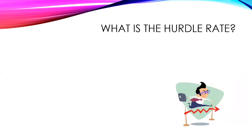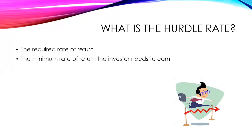There's another concept when we talk about internal rate of return that we need to pay attention to, and that is called the hurdle rate. So what is the hurdle rate? The hurdle rate is the minimum required rate of return that an investor must earn. This is the minimum rate that the investor has to earn, and there could be different reasons for this. Maybe they're borrowing the money, and in order to make the investment viable, they have to earn at least this amount or more. So the hurdle rate is basically the minimum the investor is wanting to earn on the investment.